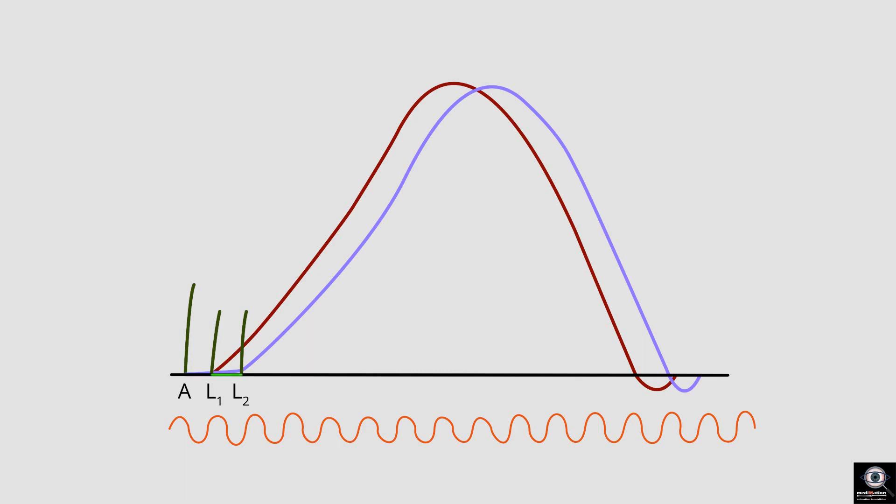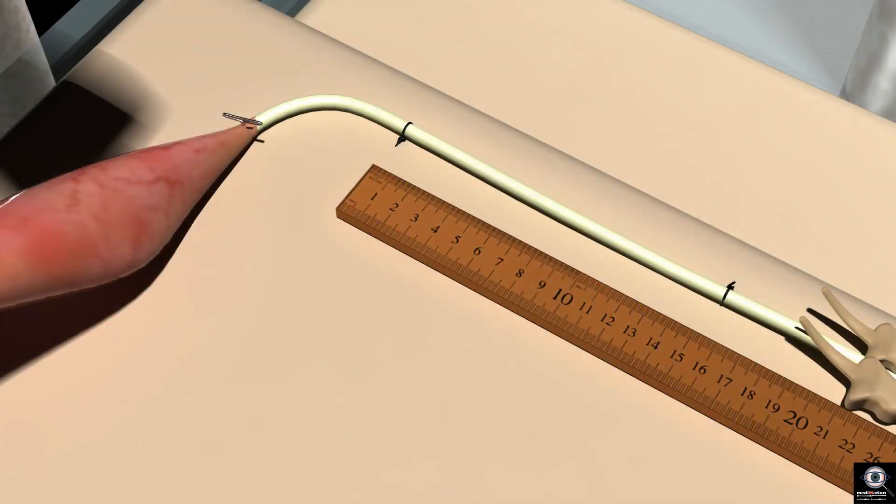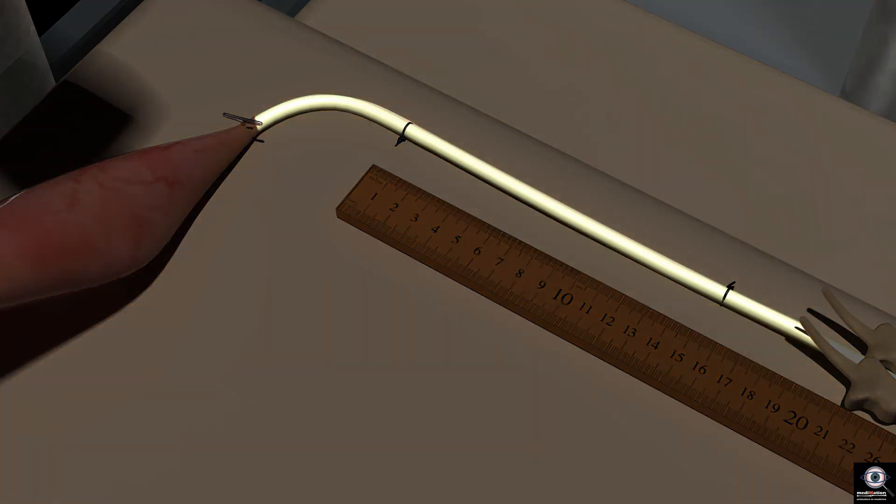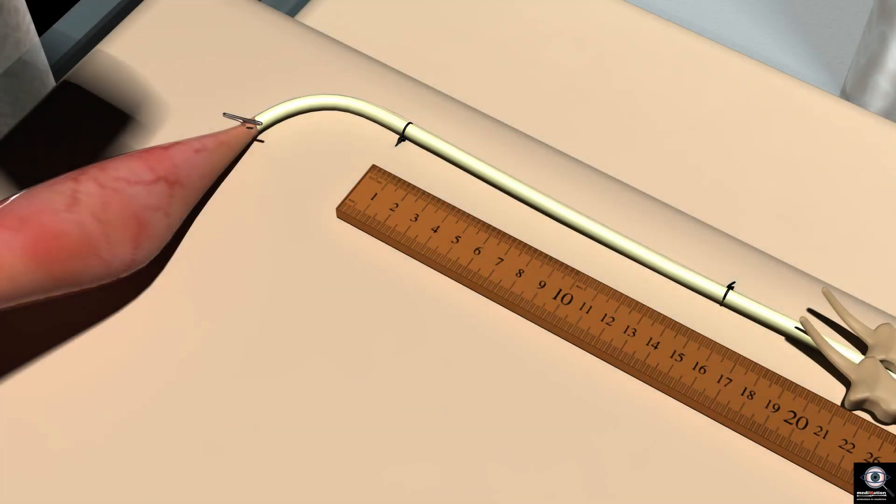We calculate the difference between the two latent periods. This gives us the time taken for the nerve impulse to travel the distance between the two points of stimulation on the nerve.